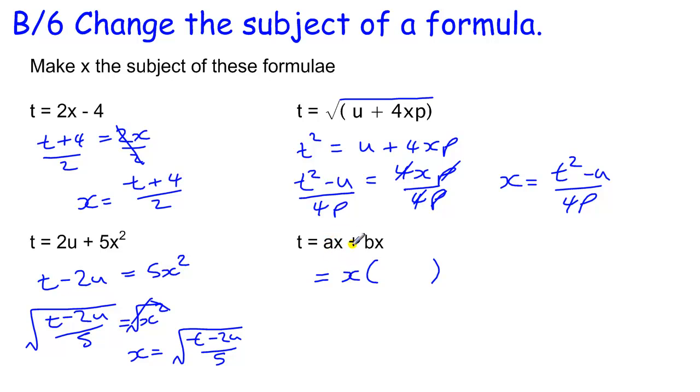So what do I times x by to get ax? Well, that's a. And times x by to get bx is b. So I put a bracket there. I've taken the x outside and all I've got left is the a plus b here.